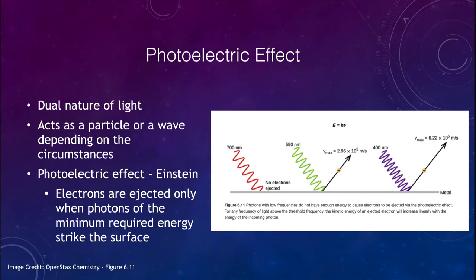Now, one other thing we want to look at is the photoelectric effect, which shows the dual nature of light, meaning that light can act as a particle or a wave depending on the circumstances. Einstein found that electrons are ejected only when there is a minimum required energy. When we send in photons of red light, no electrons are ejected. The key is it doesn't matter how much red light I send in.